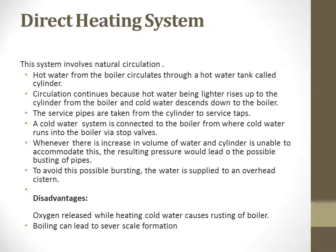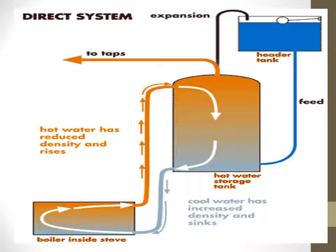A disadvantage of direct heating is that when water boils, there is a risk of rusting around the boiler due to oxygen — rust and corrosion can develop on the boiler. Also, boiling causes scaling, which is like hardness of water. In the diagram, the blue side shows the header tank, then the hot water storage tank, which leads to the boiler below. Water re-circulates back up and moves to the taps.